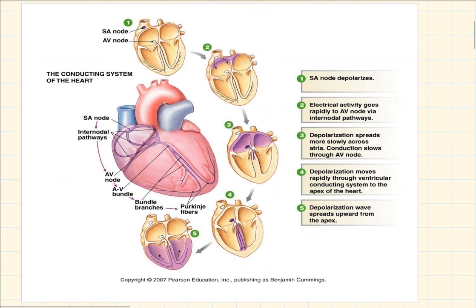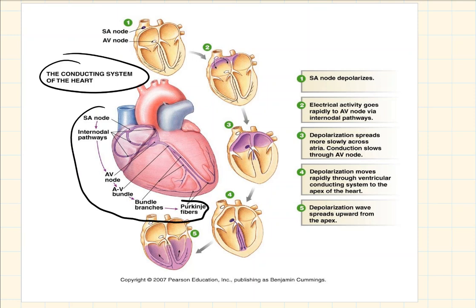Let's start with the anatomy of the heart. This picture shows the autorhythmic cells — the conducting system of the heart. Autorhythmic cells are one of two types of cells in the heart; the other type is contractile cells. Autorhythmic cells are called that because they automatically generate their own rhythm. You may have also heard them called pacemaker cells because they set the pace and the heart rate. They can spontaneously generate their own action potentials. The first place the action potential begins is the SA node, which is the primary pacemaker of the heart.